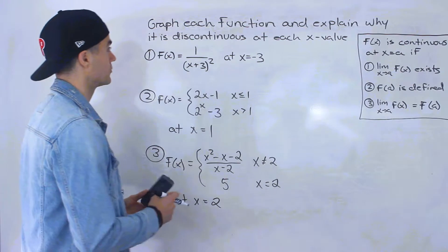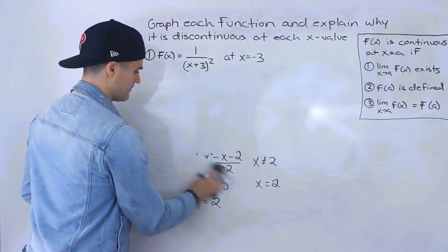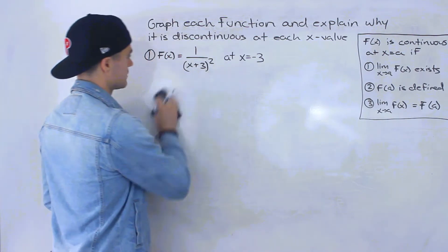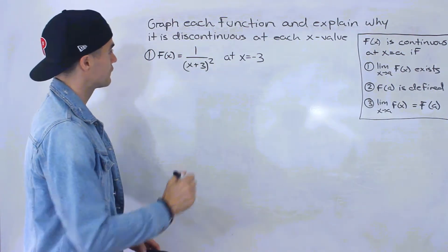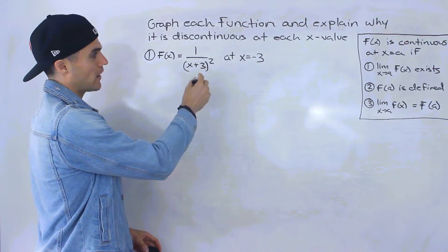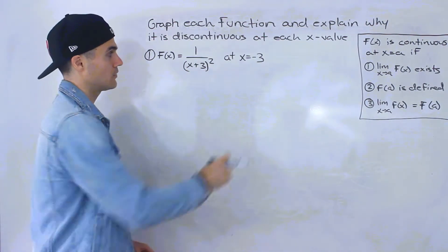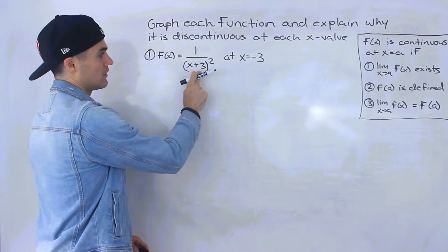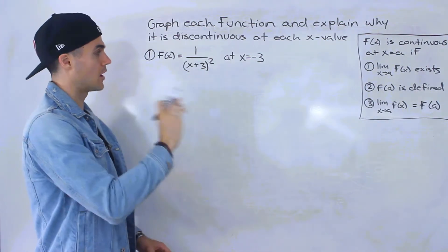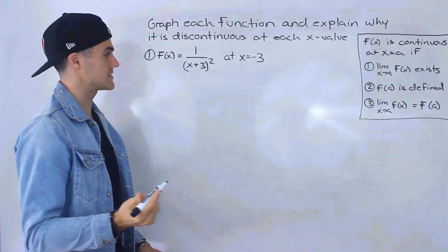Sometimes it may even fail multiple points. I'm going to erase two and three for now to give myself some room. So we have f of x equals one over x plus three squared at an x value of negative three. Notice that at x equals negative three, the function is going to be undefined — the denominator is going to be zero — so we know there's going to be a vertical asymptote there.